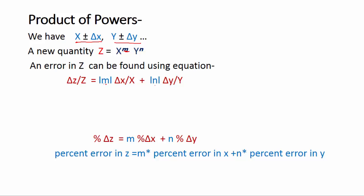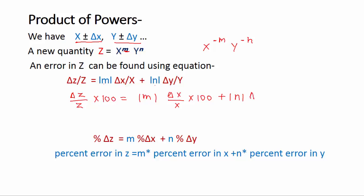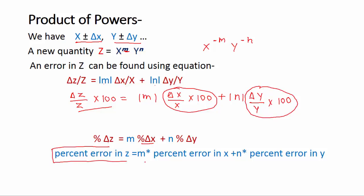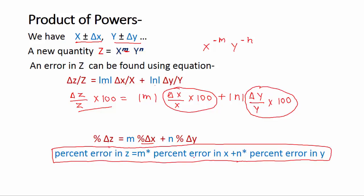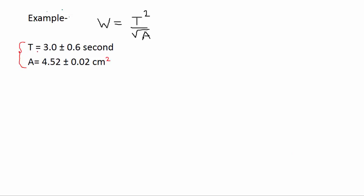Keep in mind: this formula uses positive values of the powers. Whether the power is negative minus m or negative n, you always put the positive value here. If we multiply both sides by 100, this gives us the percentage error formula: percentage error in z equals m multiplied by percentage error in x plus n multiplied by percentage error in y.